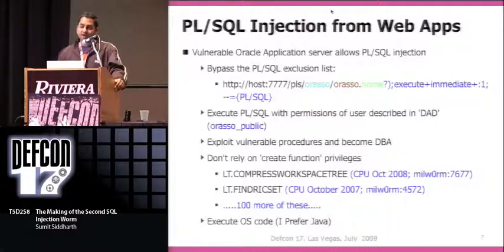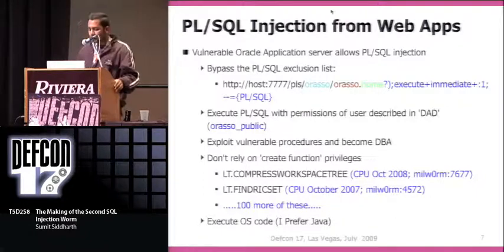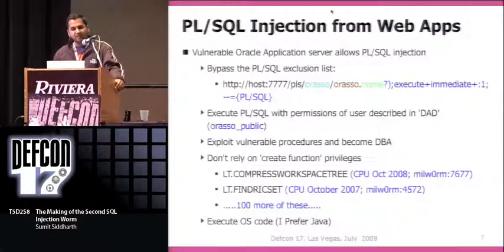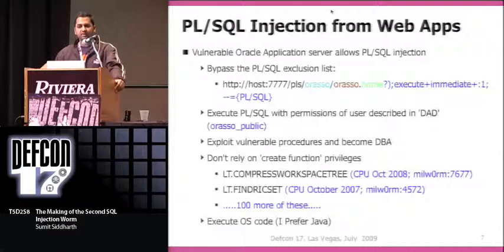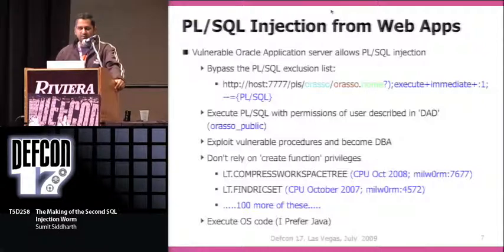From here, as long as you can execute PL/SQL, you can exploit vulnerable packages stored in the backend database, escalate privileges, and become DBA. Once you become DBA, you can do things like OS code execution. In this particular example, the DAD user is a really low-privileged user called ORA_SSO_PUBLIC — SSO standing for single sign-on — which ships with Oracle application server installs and doesn't even have create function privileges. To get past that, you use cursor-based injection exploits, of which there are many available on Milworm.